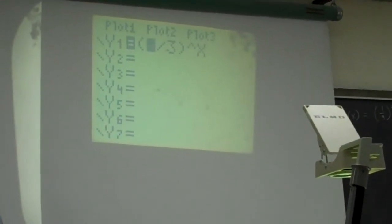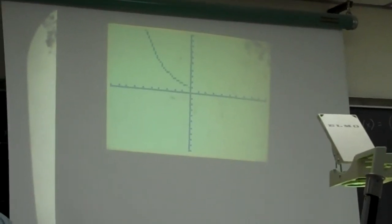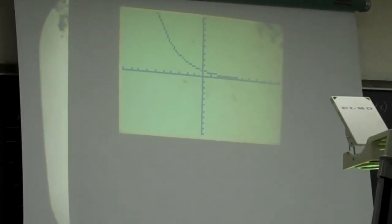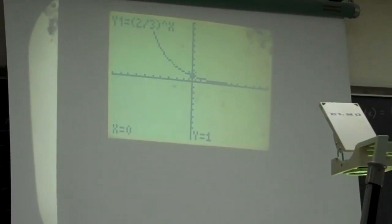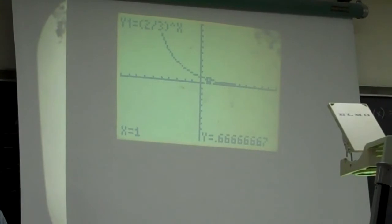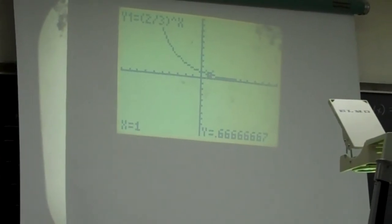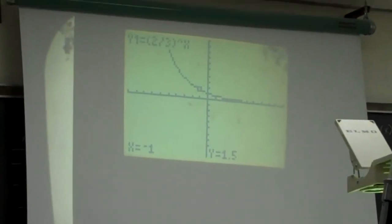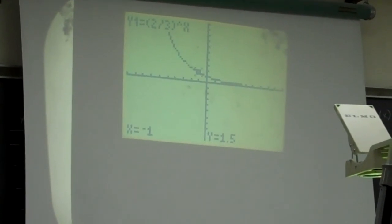What if I had not one-third to the x power, but two-thirds to the x power? It's still a decreasing function, but you'll notice it's not as sharp. It still goes through (0, 1). If I go to x equals 1, point six repeating is 2/3. Two-thirds to the first power is, surprise, 2/3. And if I go to the negative one power, I get 1.5 — which as a fraction is 3/2. So that's the reciprocal: 2/3 and 3/2.